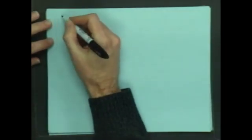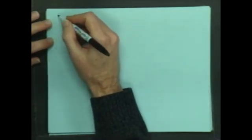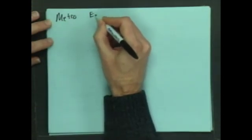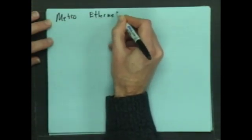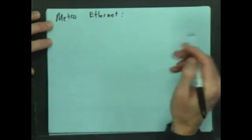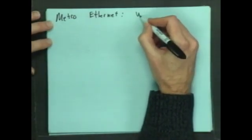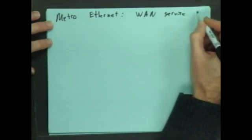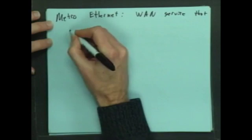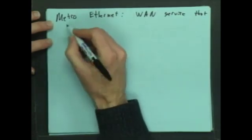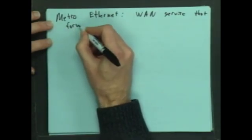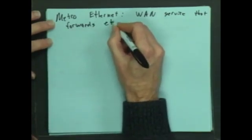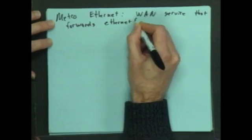So one last Ethernet thing. We will call this Metro Ethernet. Metro Ethernet is a WAN service. You're going to get a LAN service when you get Metro Ethernet. It's a WAN service that forwards Ethernet frames.